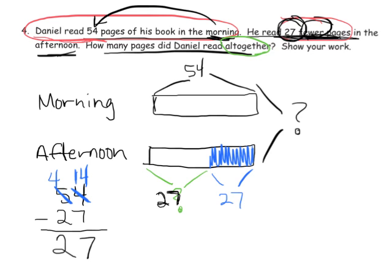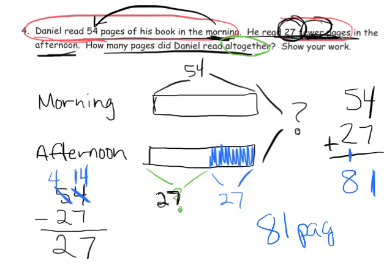He read 27 pages in the afternoon. The question is how many pages did he read all together. That means we're going to have to add 54 from the morning, 27 from the afternoon, and we're going to add, and that will give us the answer. Four ones plus seven ones gives us 11 ones, so that's a 1 and a carry, a 10, because we can bundle 10 of those 11 and get an extra 10. Now we have 5 tens plus 2 tens plus 1 ten, so that equals 8 tens. So the answer is 81 pages all together.